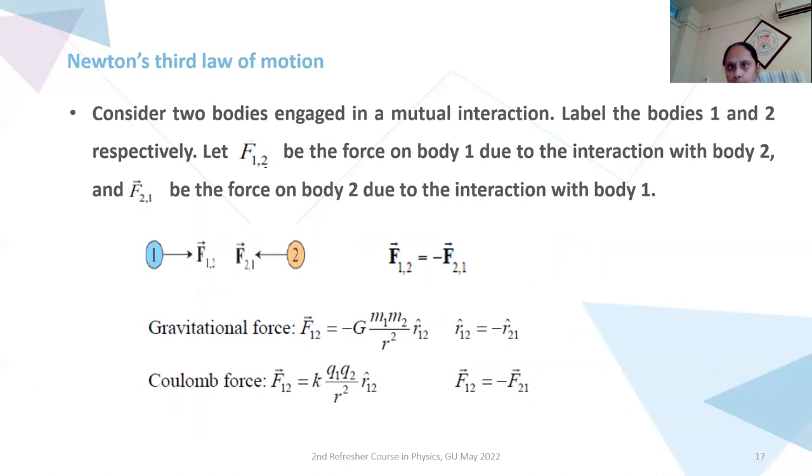Now Newton's third law of motion. Consider two bodies engaged in a mutual interaction. Label bodies as 1 and 2 respectively. Like in a figure, blue color represents body 1, yellow color represents body 2. F12 is the force on body 1 due to interaction with body 2. And Newton's third law says that action and reaction are always equal and opposite. So I have F12 is equal to minus F21.